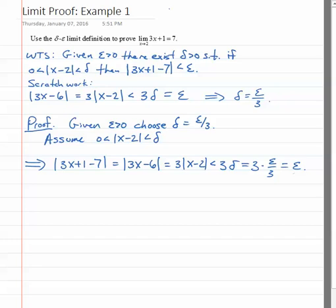Therefore, by the delta epsilon definition for limits, we have just proven that the limit as x approaches 2 of 3x plus 1 equals 7.